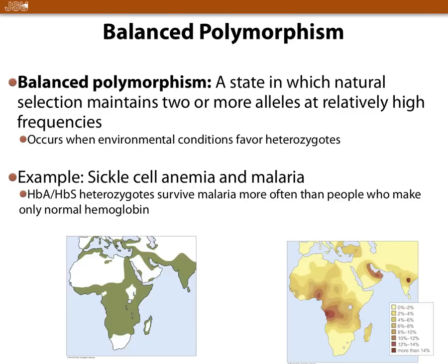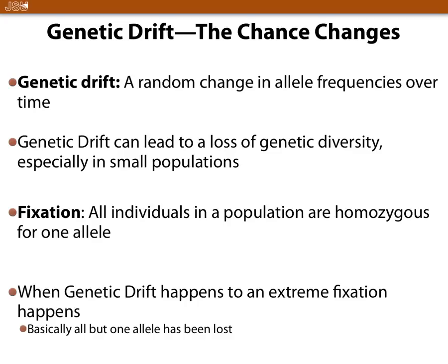Balanced polymorphism is where two or more alleles are at relatively high frequencies in an environment because of natural selection. A good example is sickle cell anemia — there are multiple alleles for hemoglobin, and the HbS allele causes sickle cell anemia but remains common in the population, particularly in Africa, because it provides protection against malaria. Genetic drift is random change in allele frequencies over time — for example, blood type allele frequencies changing over time.